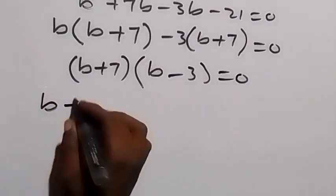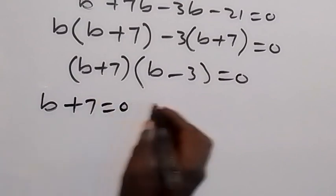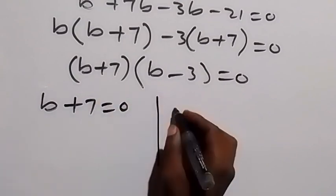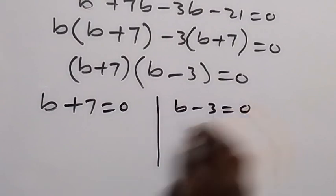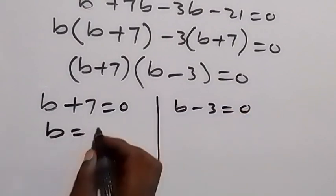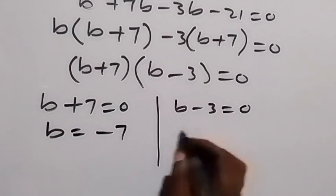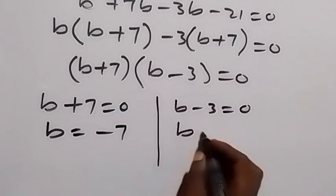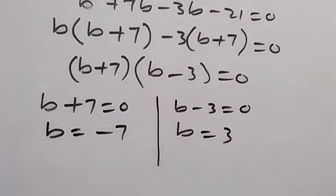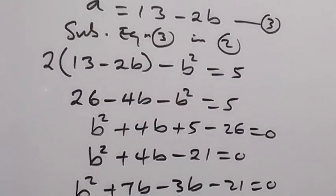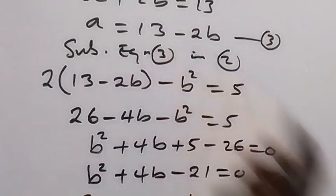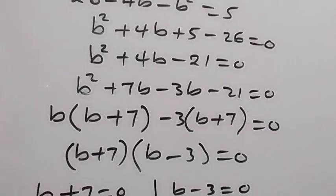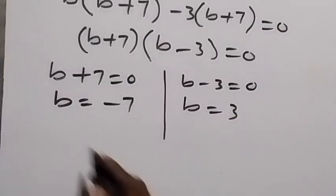We have two possible cases: the first is b plus 7 equals 0, giving b equals minus 7, and the second case is b minus 3 equals 0, giving b equals 3. Now to get the value of a, we use equation 3, which says a equals 13 minus 2b.